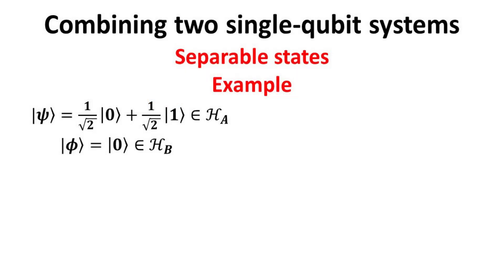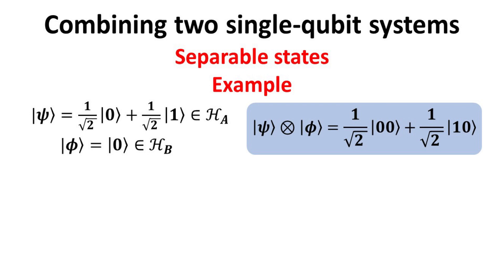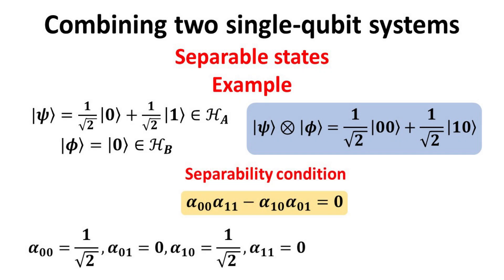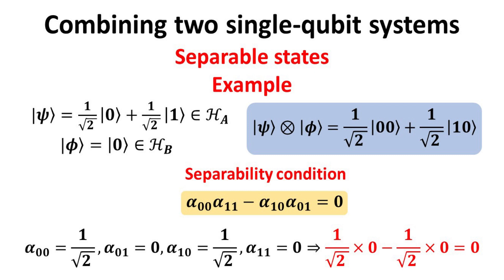Let's consider an example of a separable state. A separable composite two-qubit state can be written as a tensor product of two single-qubit states — we let these be phi and psi kets as shown. The tensor product of psi and phi kets yields the following composite state. Recalling the separability condition, the product of the diagonal amplitudes minus the product of the off-diagonals must equal zero. Indeed, this composite wave function satisfies the separability condition, which is not surprising since we constructed it from the tensor product of the single-qubit states.